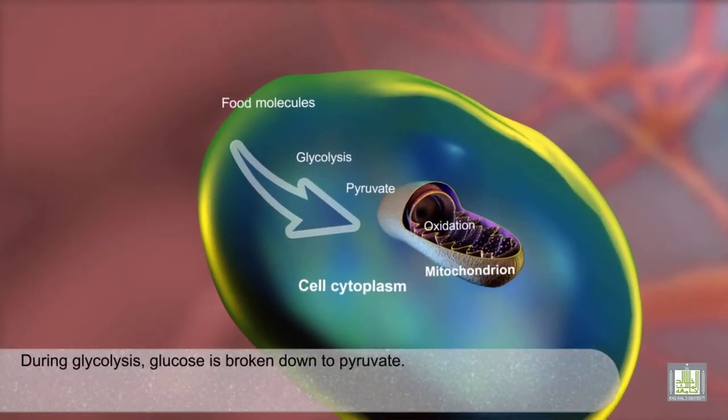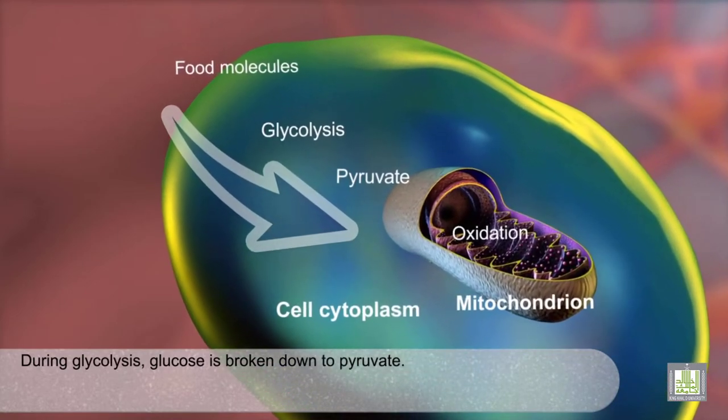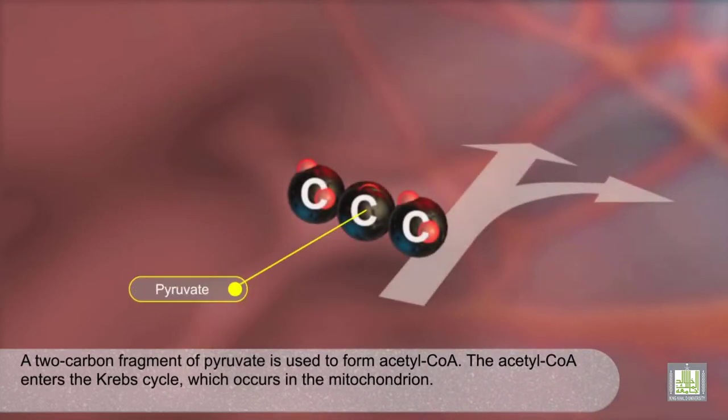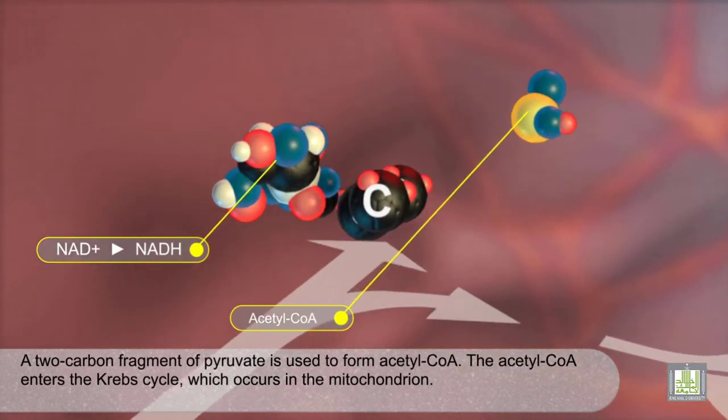During glycolysis, glucose is broken down to pyruvate. A two-carbon fragment of pyruvate is used to form acetyl-CoA. The acetyl-CoA enters the Krebs cycle, which occurs in the mitochondrion.